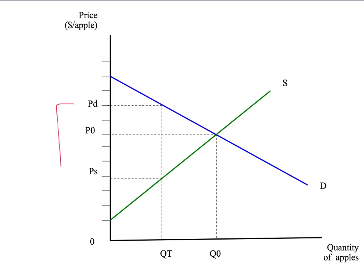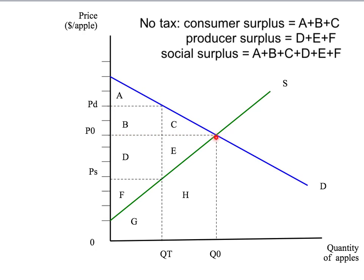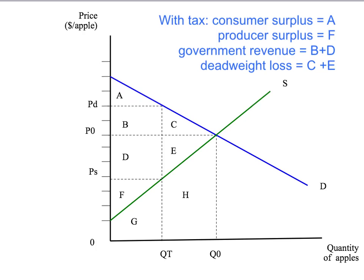Let's put the tax on there. It's going to be a tax of T dollars, and we have our new sales tax equilibrium. In that equilibrium, we have a quantity QT, a price to sellers of PS, and a price to buyers of PD. In the absence of a tax, consumer surplus is A plus B plus C, producer surplus is D plus E plus F, and total social surplus is A plus B plus C plus D plus E plus F. With the tax, consumer surplus is reduced to area A, producer surplus is reduced to area F. The government gets some revenue, B plus D. But total social surplus has fallen to A plus B plus D plus F. So our deadweight loss is the loss of social surplus, C plus area E.